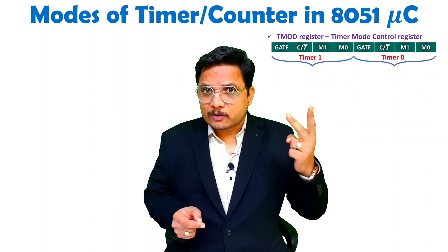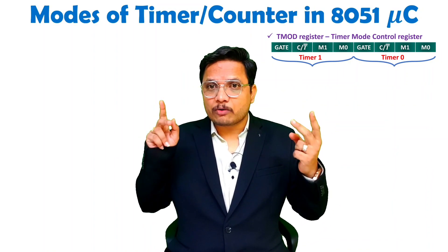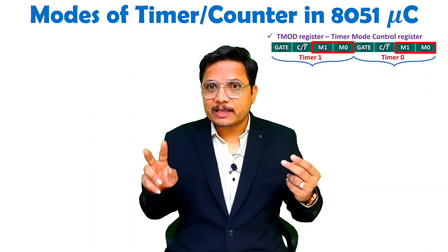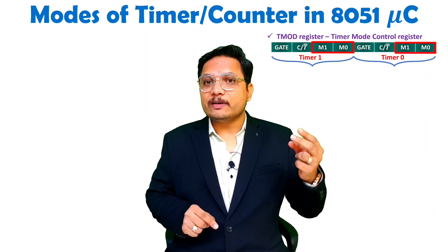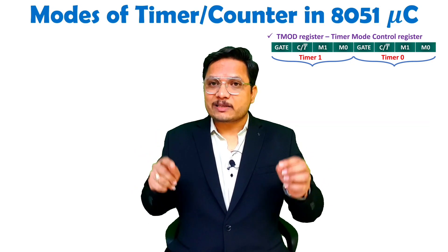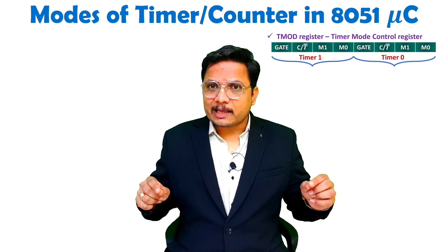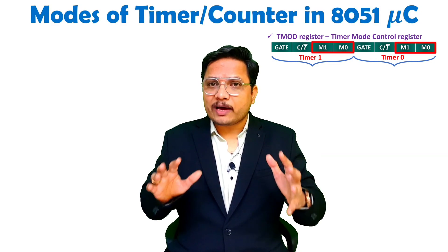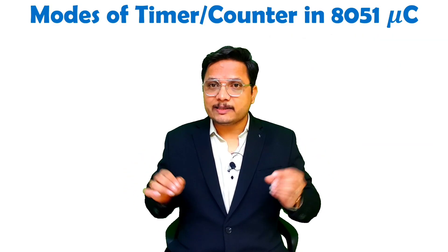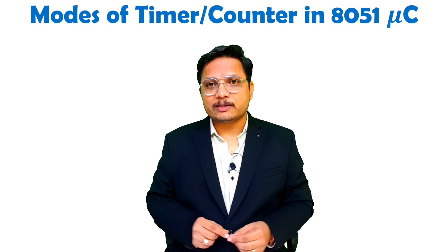If the mode bits are 0,0 then Mode 0 is selected. If they are 0,1 then Mode 1 is selected. If they are 1,0 then Mode 2 is selected, and if they are 1,1 then Mode 3 is selected. I will explain all these modes along with practical examples so you will have a fair enough understanding of how exactly these modes work with the 8051. Let us see all of them step by step.